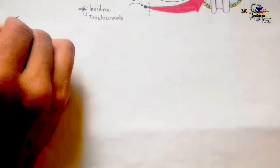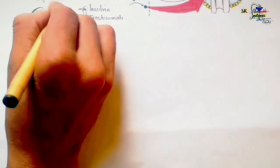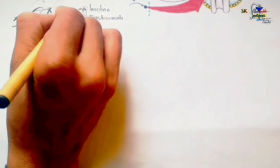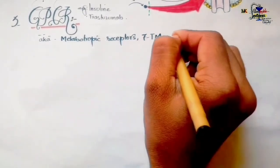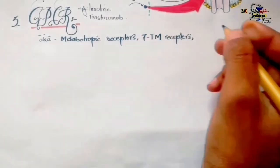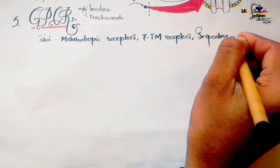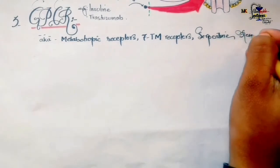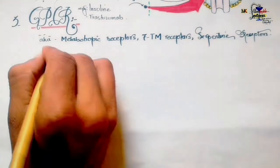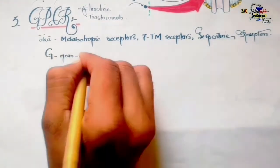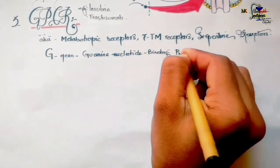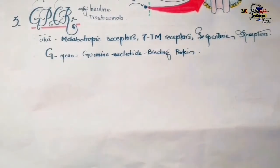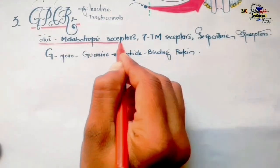The next topic is G-protein-coupled receptors, or GPCRs. These receptors are also known as metabotropic receptors, seven-transmembrane receptors, or serpentine receptors due to their snake-like structure. Most drugs act by binding to GPCRs.